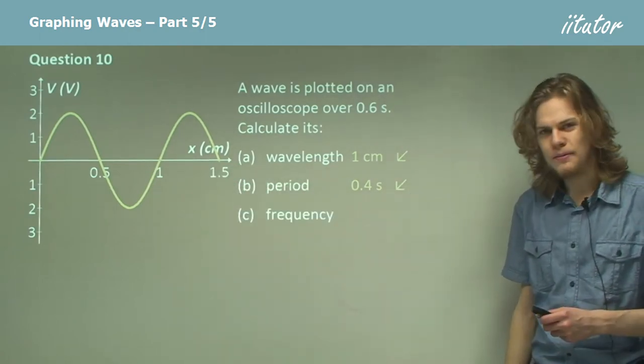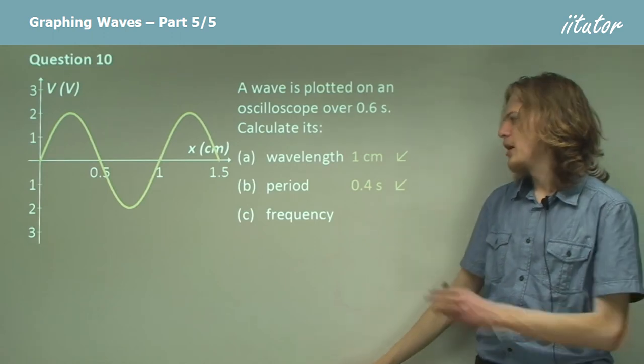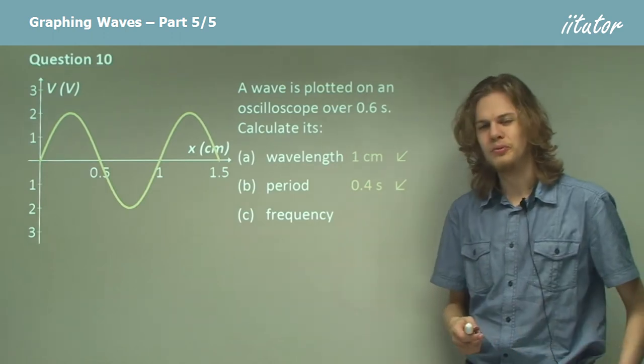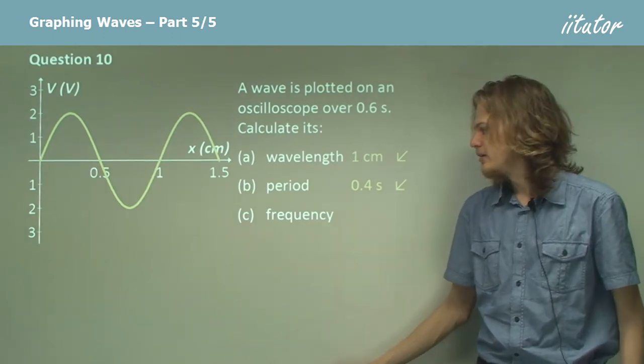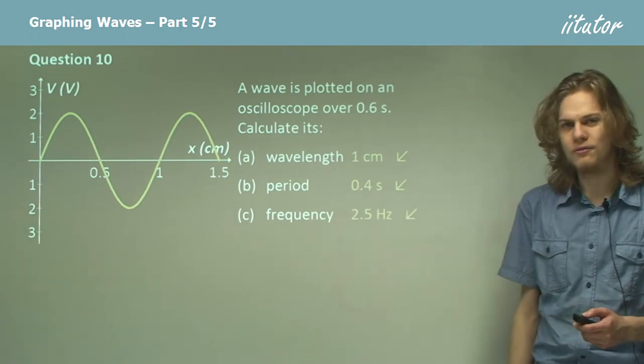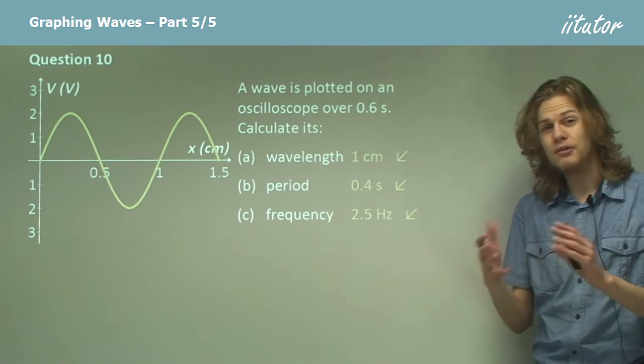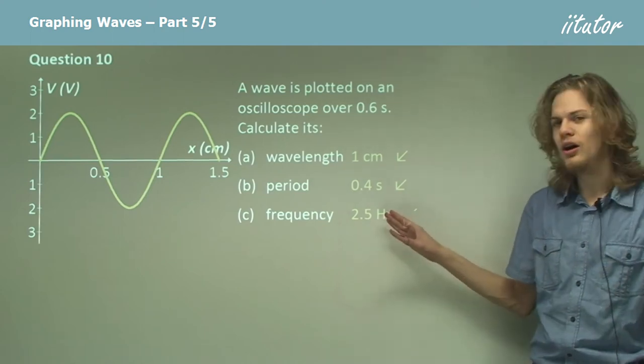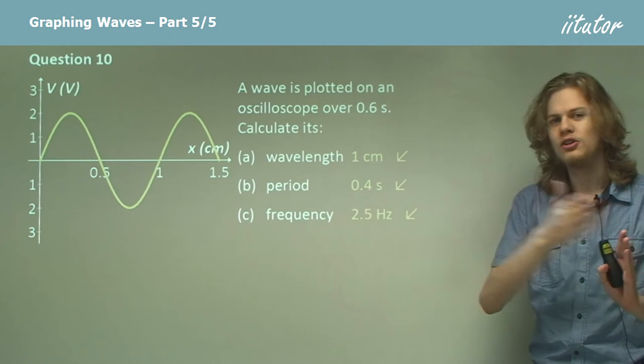Find the frequency. Well now that we have the period, the frequency will be pretty easy to find. That will simply be 1 over 0.4, which gives us 2.5. That means that every second, two and a half wavelengths will pass through a particular point.